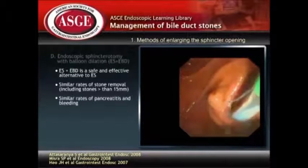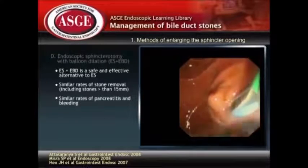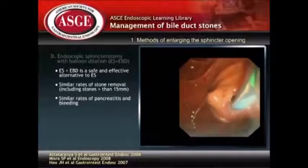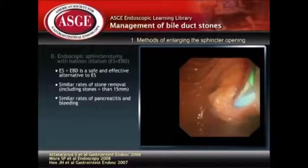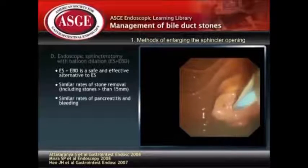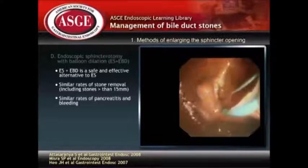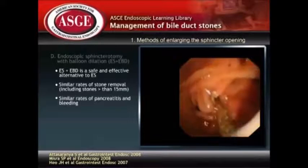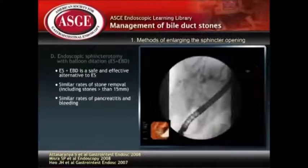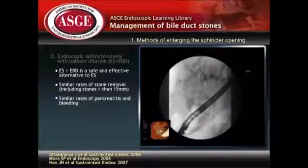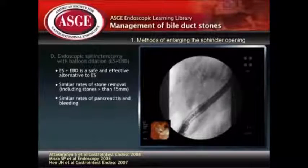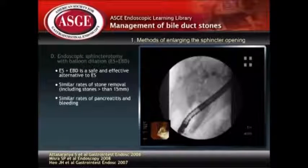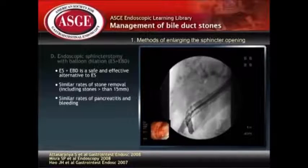The technique of endoscopic sphincterotomy with balloon dilation first involves a limited sphincterotomy, up to one-third of the size of a full sphincterotomy. A balloon catheter is passed on a guidewire across the papilla and centered at the sphincter. The balloon is then inflated and the sphincter gradually dilated to between 12 and 20 millimeters. One should observe for disappearance of waisting, and the dilation is maintained for approximately 60 seconds.